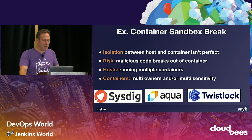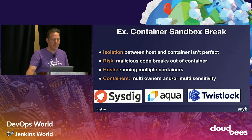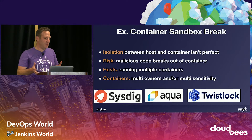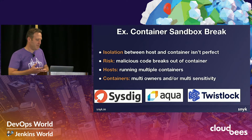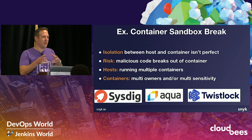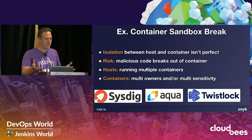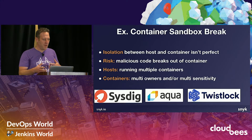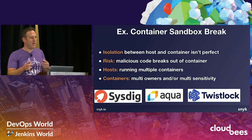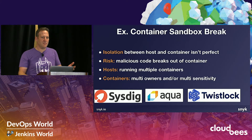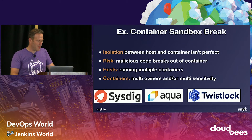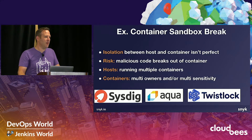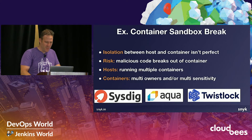A great example is container sandbox breaking. In containers, there's isolation between the host and the container, but this isn't perfect. One of the risks is that malicious code is able to break outside of the container and inspect the host. Since hosts are now running multiple containers, sometimes coming from different companies or with different sensitivities, this is a new and emerging security problem. Companies like Twistlock and Aqua were specifically built from the ground up to protect against these kinds of problems.